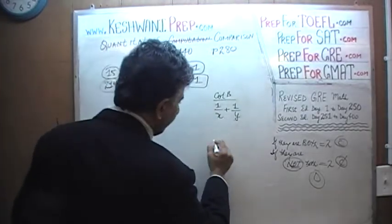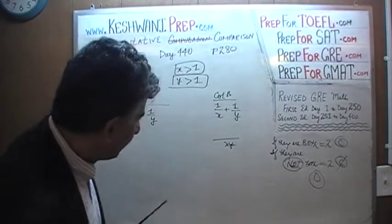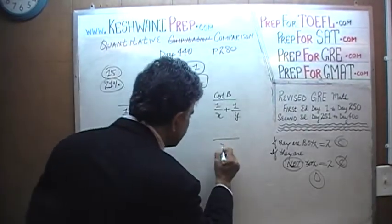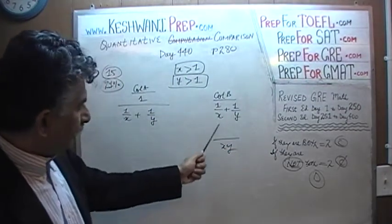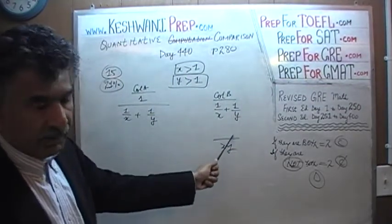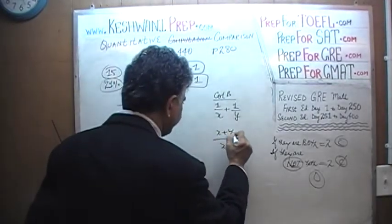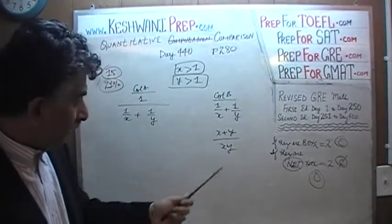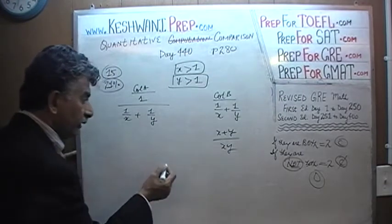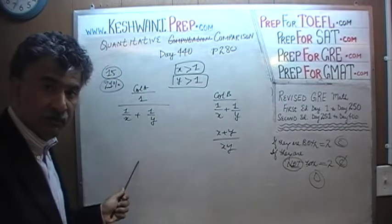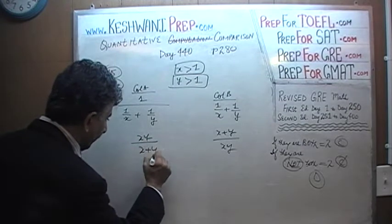The common denominator for column B is going to be x times y, giving us (x plus y) over (xy). Then for column A, which is the reciprocal, we are going to have x times y over x plus y.